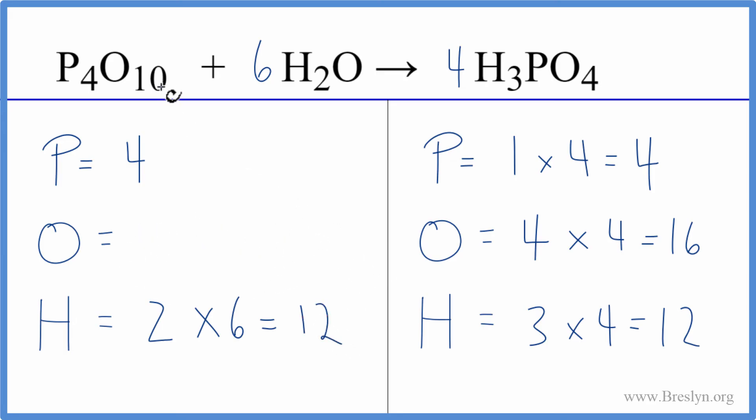Let's update the oxygen atoms. We have ten oxygen atoms here plus one times six. So that did fix the oxygens and we're done. This equation is balanced.